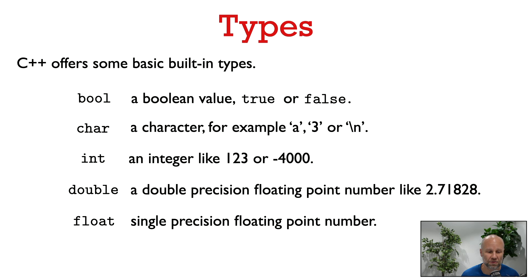There are also some built-in types for floating point numbers. There's double, a double precision floating point number, and there's also float, which is a single precision floating point number.